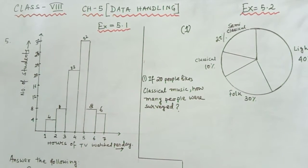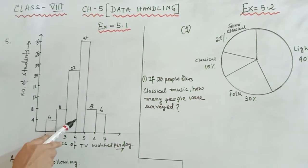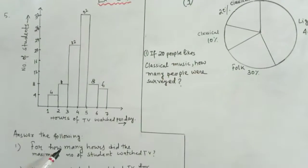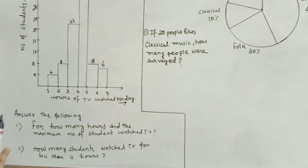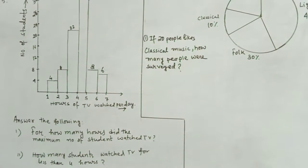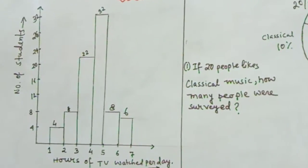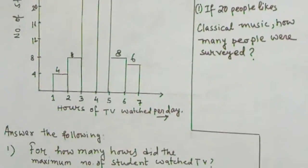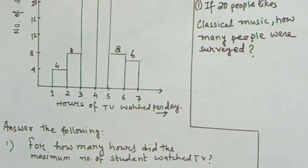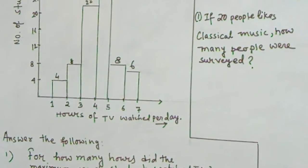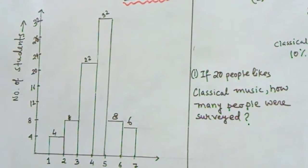Today we will do question number 5 from exercise 5.1. Here is a histogram already given. You have to read the histogram and give the answer to the following questions. The question is regarding this histogram. The number of hours for which students of a particular class watched television during holidays is shown through the given graph.